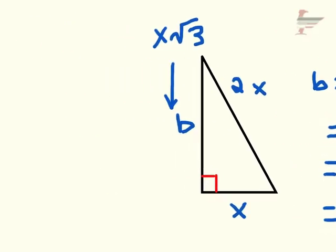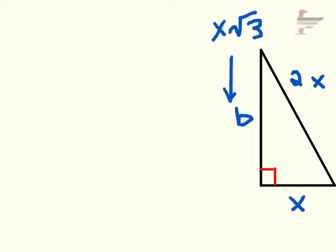This means that any 30-60-90 triangle can be written with the ratio 1 to √3 to 2. Keep in mind that √3 is a number between 1 and 2.